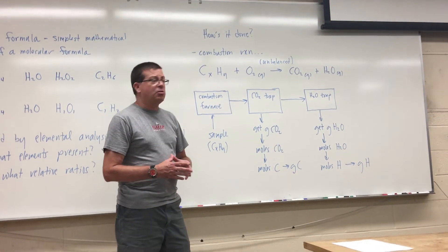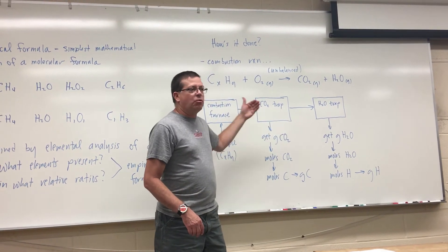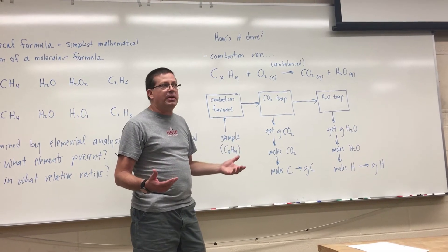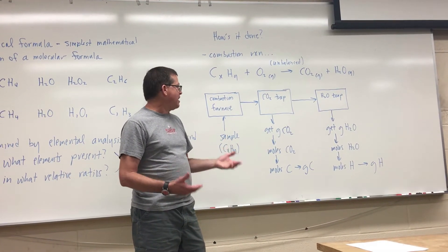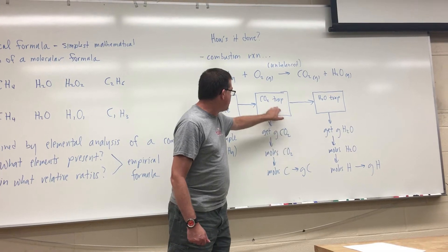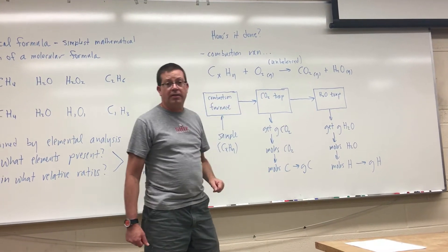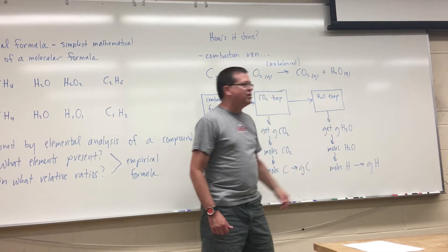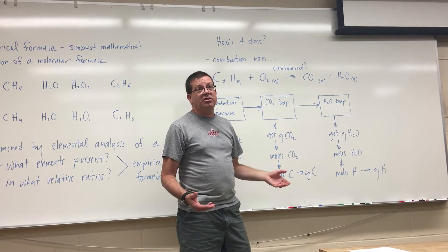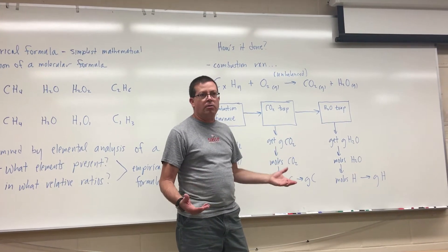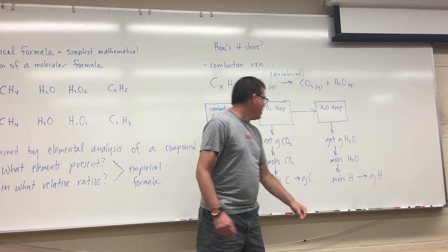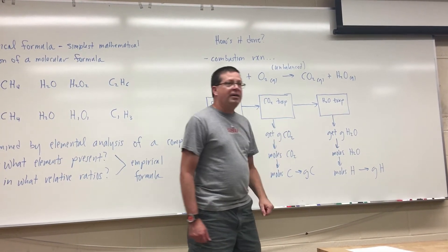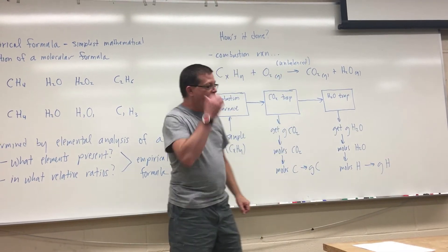I can weigh the trap before the reaction and after the reaction, and the law of conservation of mass tells me the difference in mass is due to the carbon dioxide sequestered in there. I can do the same with the water trap — the difference between the mass before and after has to be the mass of the water trapped. So at the end of the experiment, I have a mass of carbon dioxide and a mass of water.